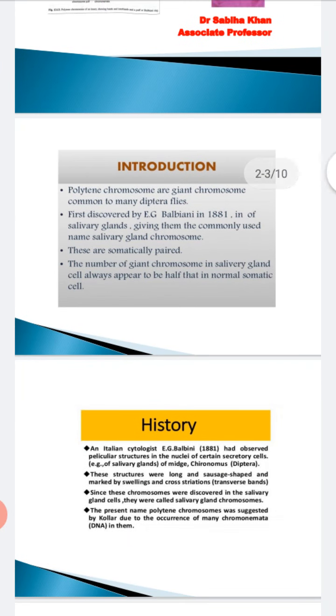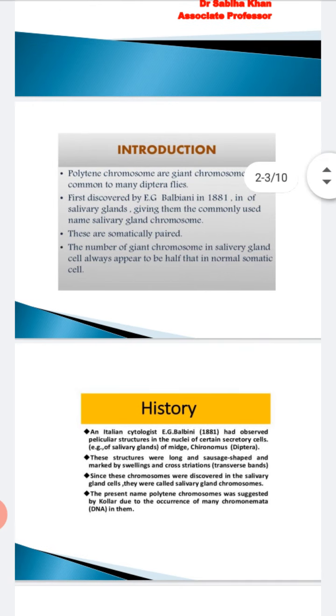Now history. Who discovered it? An Italian cytologist titled Balbiani in the year 1881 discovered these giant cell chromosomes in Chironomous dipteran larva salivary gland. These structures were long and sausage-shaped with swellings and cross-striations. These chromosomes were discovered in salivary gland, hence they are called salivary gland chromosomes.